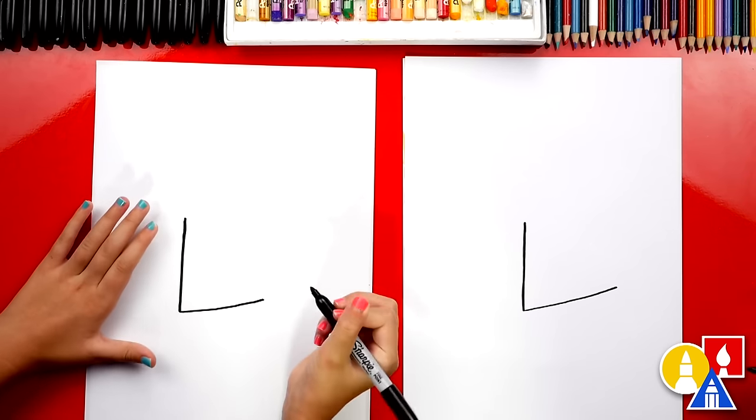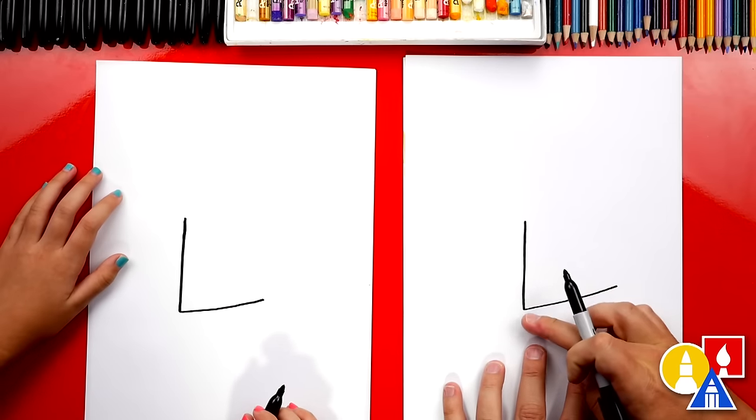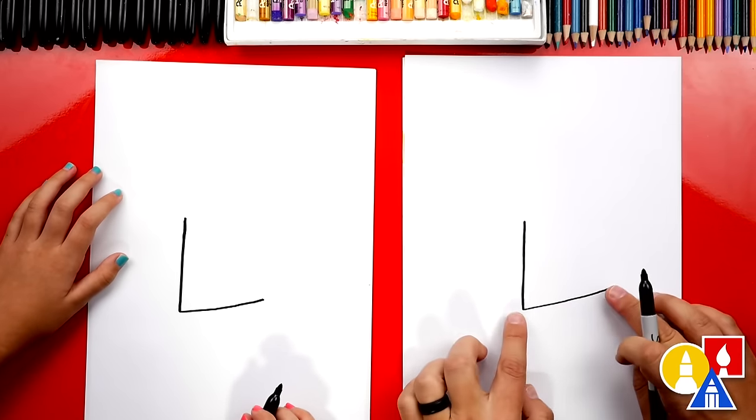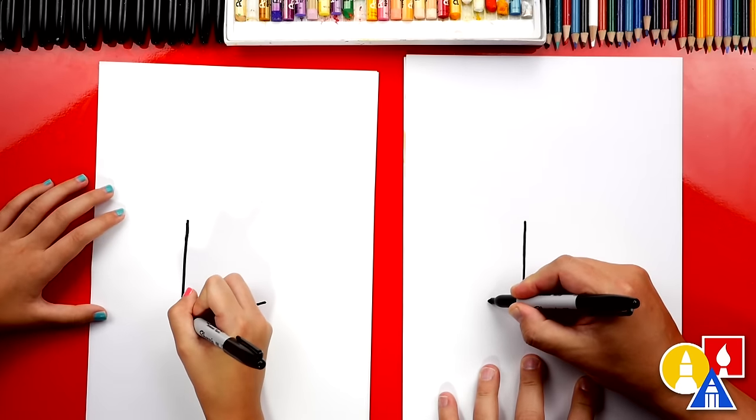Good job. Okay, now we're gonna draw the other side and we're gonna do the same thing. We're gonna draw a diagonal line going this way, but we're gonna draw it shorter. So we're gonna go this way and shorter.